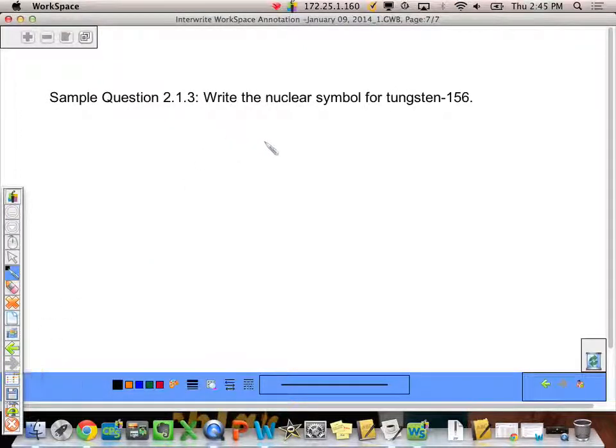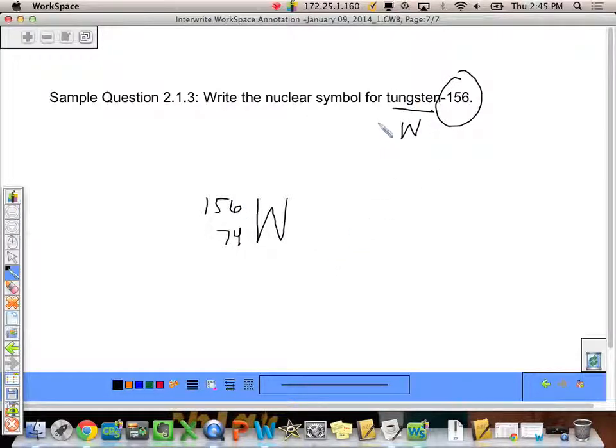The final question asks us to write the nuclear symbol for tungsten-156. So again, this goes back to what we were talking about in sample question 2.1.4. This time, tungsten we know is W. I can look at the periodic table to look at the atomic number, and that is 74. So I have a big W, 74. The 156 represents the mass of the isotope, 156. We're assuming, since it's not giving us any information about ions, that there's going to be no ion there. That simply is my answer.